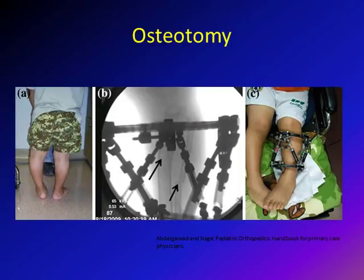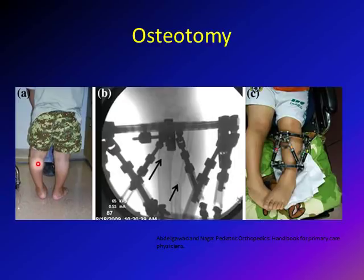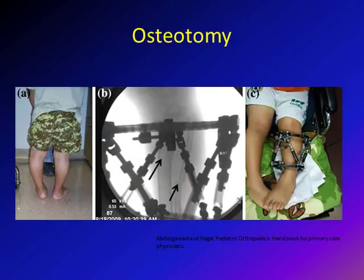The second surgical option is osteotomy — cutting the bone and correcting the deformity. This can be done acutely or by applying an external fixator device and gradually obtaining correction. In a patient with dysplasia and obvious Genu Varum on the left side, an external fixator was applied, an osteotomy was made at the tibia, and also a fibular osteotomy was performed. The device was then used to gradually correct the deformity until the required correction was obtained.